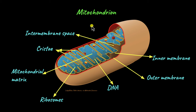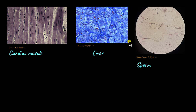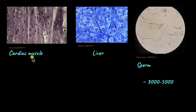The number of mitochondria in a cell differs based on the function of the cell. Some cells like cardiac muscles, liver, and sperm cells have a lot of mitochondria — around 3,000 to 5,000 mitochondria, believe it or not. Cardiac muscles are the muscles that make up your heart. These muscles need to keep contracting and relaxing continuously so that the heart can pump blood to all parts of the body. Because of this constant need to beat, cardiac muscle cells need more energy — that's why they have more mitochondria.